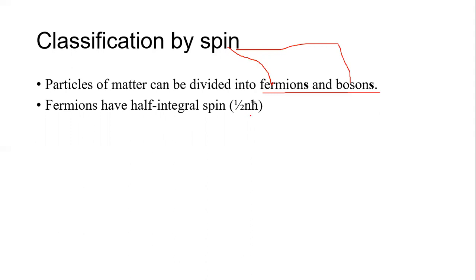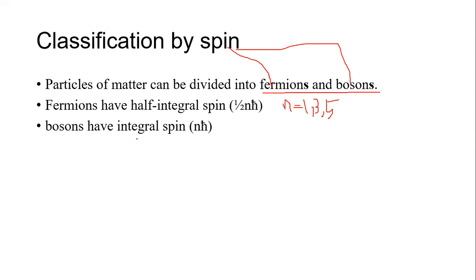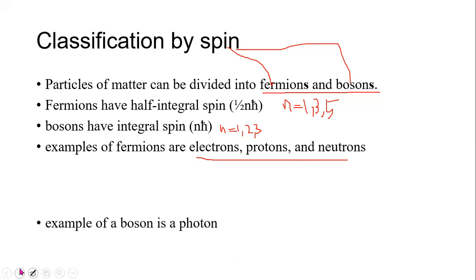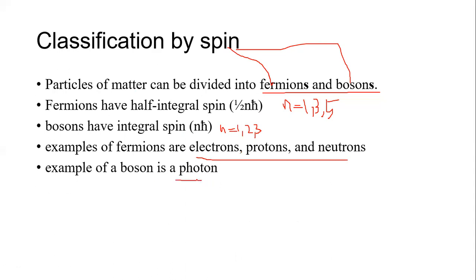Particles with half-integer spin values — one-half, three-halves, and so on — are called Fermions. Particles with integral (integer) spin are called Bosons. Examples of Fermions include electrons, protons, and neutrons, which have half-integral spin. An example of a Boson is the photon.